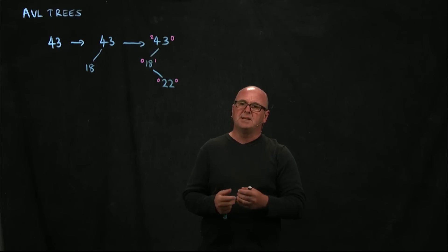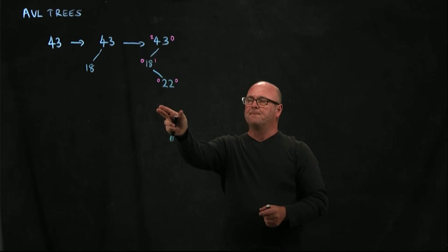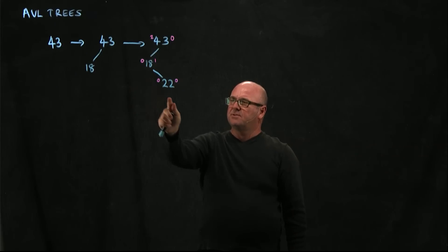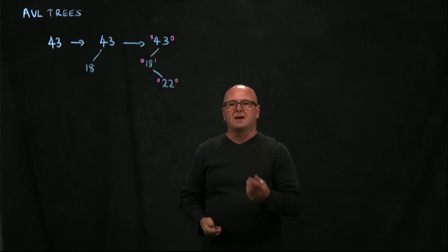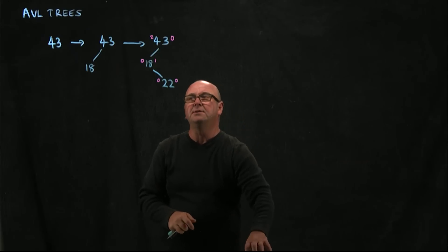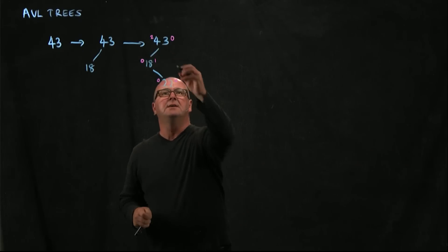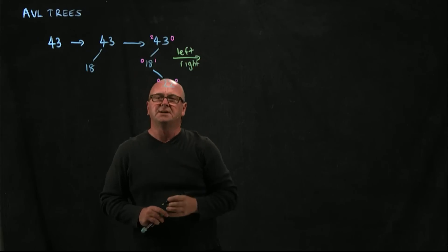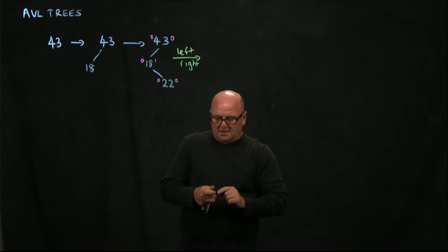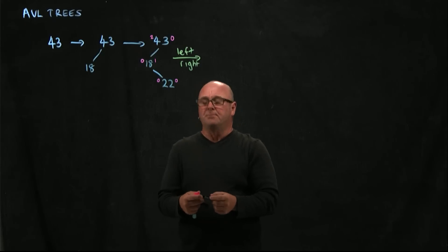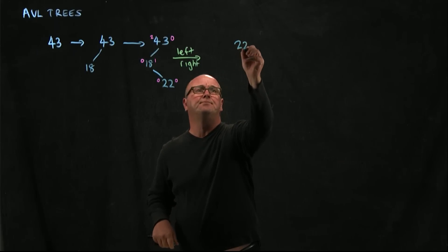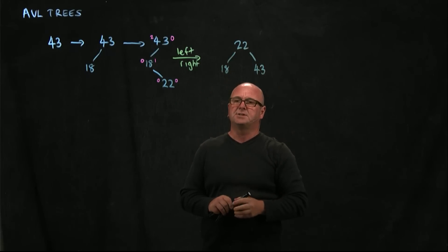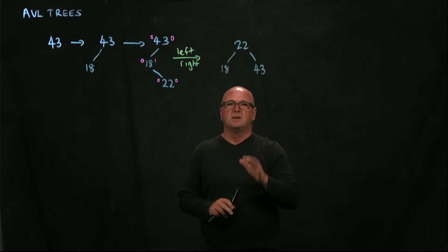The imbalance is in the left child's right subtree, so we have to do a left-right rotation. When we do that, we bring 22 up to be the root, 18 becomes the left child of 22, and 43 becomes the right child of 22. Now our tree is balanced.